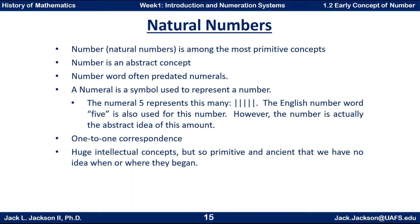If you think about how very young children first learn about numbers, it parallels these early developments. They often first learn the sequence of the smallest counting words, and then they later associate it with a number of fingers. Next, they can take a number of objects and count them, perhaps with the use of their fingers. However, these concepts are so basic and universal that they appear in all ancient cultures. These important first mathematical discoveries are so universal and so ancient, we have no idea when or where they were discovered, much less who discovered them.